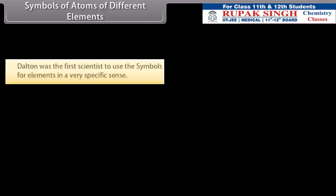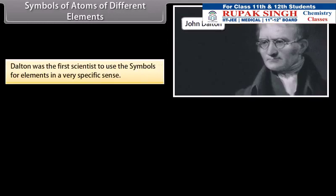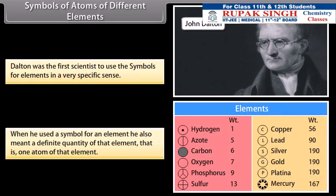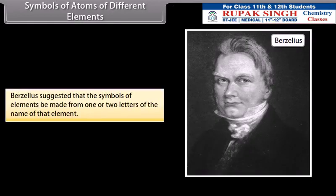Symbols of atoms of different elements. Dalton was the first scientist to use the symbols for elements in a very specific sense. When he used a symbol for an element, he also meant a definite quantity of that element, that is, one atom of that element. Berzelius suggested that the symbols of elements be made from one or two letters of the name of that element.